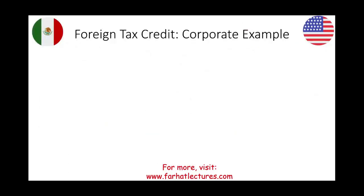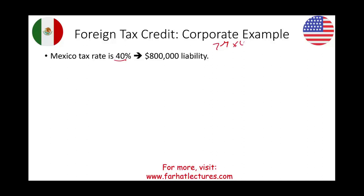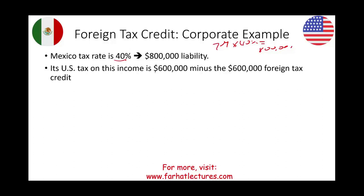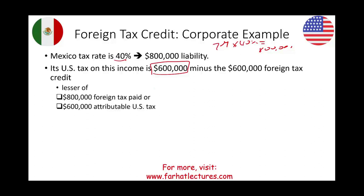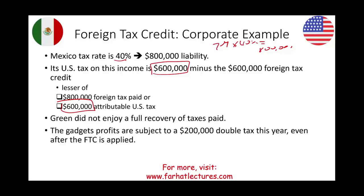Let's change this example a little bit. Assume the Mexican tax rate was 40%. With $2 million in profit, Green must send the Mexican government a check for $800,000. But the US tax is only $600,000. The credit is the lesser of taxes paid ($800,000) or the US tax on that income ($600,000) — so the credit is $600,000. Green did not enjoy full recovery; $200,000 remains unrecovered and is subject to a double tax this year.